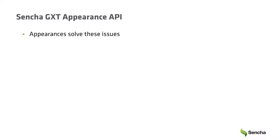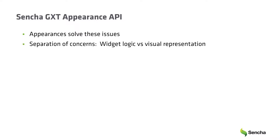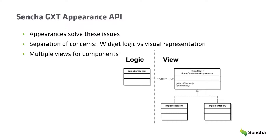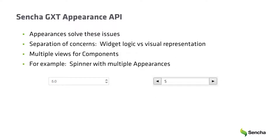With GXT 3.0, Centia introduced the Appearance API design to GXT, which is based off the design that Google introduced to handle these particular cases. With the Appearance API, two responsibilities are now separated: the widget logic versus the visual representation. In Centia GXT, components define the abstraction of all of the necessary touch points between the logic that rests inside the component and the visual portions. From this abstraction, applications can have multiple implementations for these interfaces that can dramatically change the look and feel of the component without impacting any of the logic and without the tight coupling.